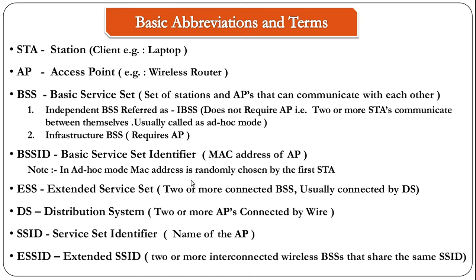These BSS are identified by a MAC address called the BSSID — basic service set identifier. In the case of an infrastructure BSS, it is the MAC address of the access point. In the case of IBSS, it is a randomly chosen MAC address selected by the first station. The next abbreviation is ESS, which stands for extended service set.